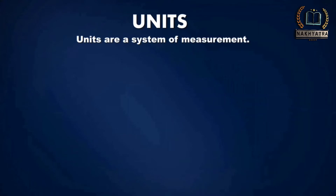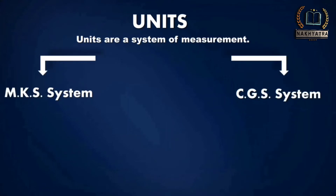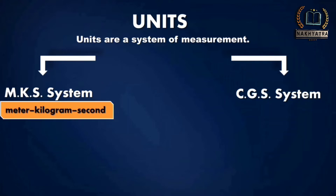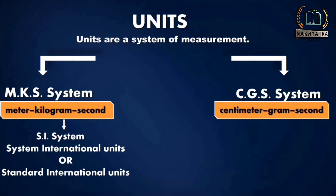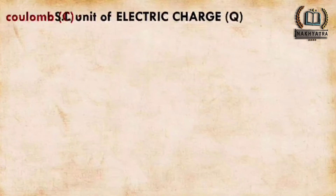Units are a system of measurement. The two types of units are the MKS system and the CGS system. MKS stands for meter-kilogram-second and CGS is centimeter-gram-second. The MKS system is the SI system — it stands for System International units or Standard International units, and these units are used and accepted globally.